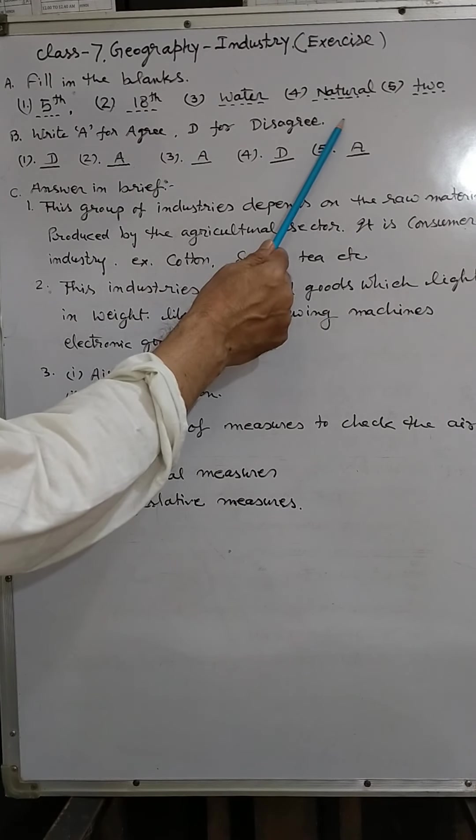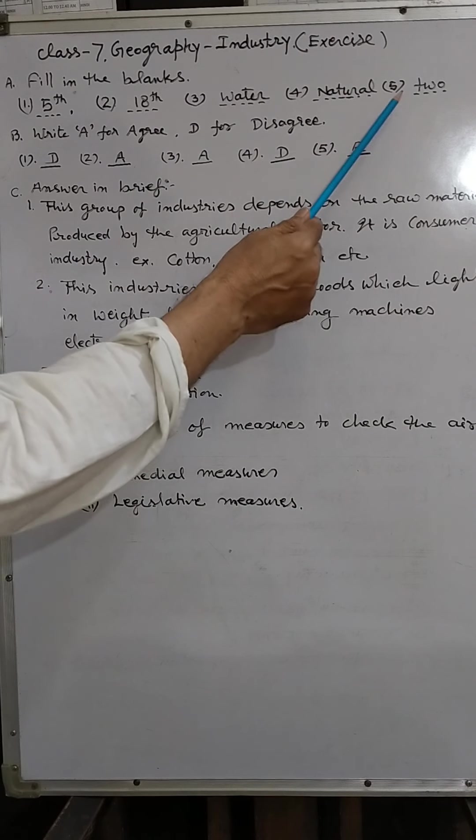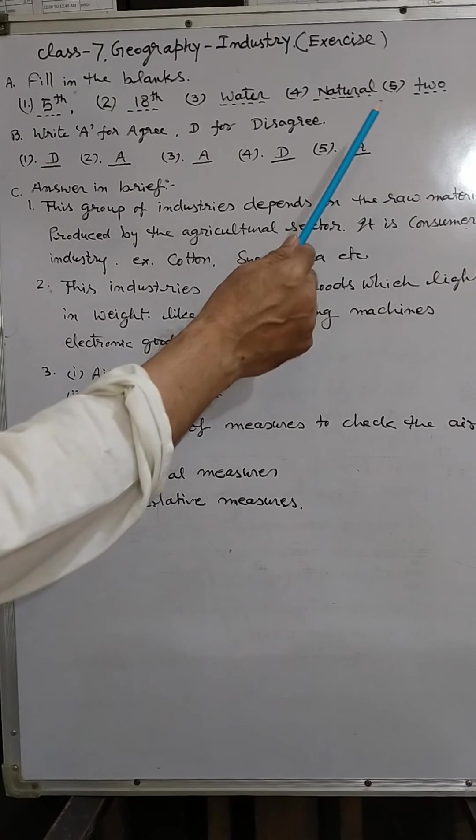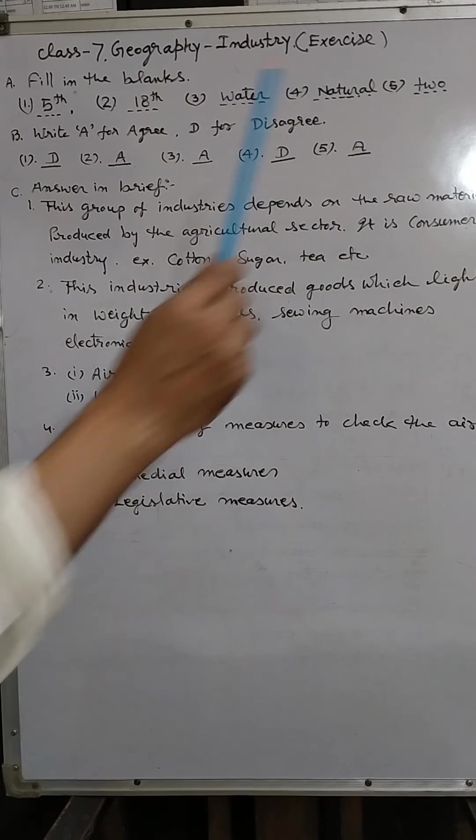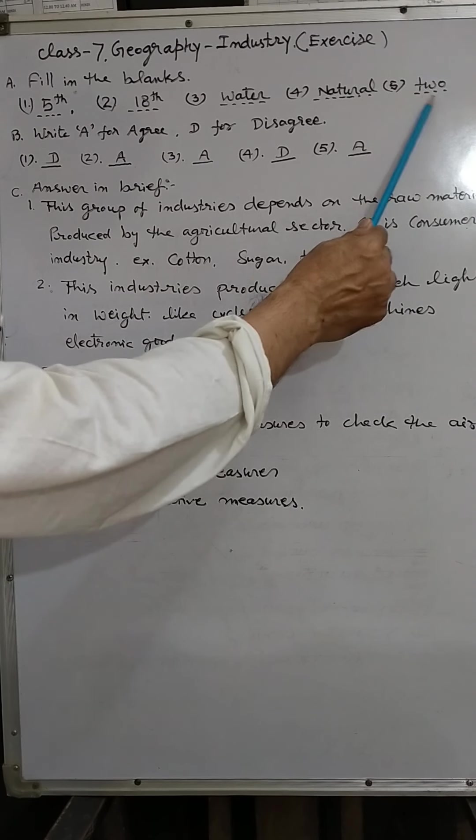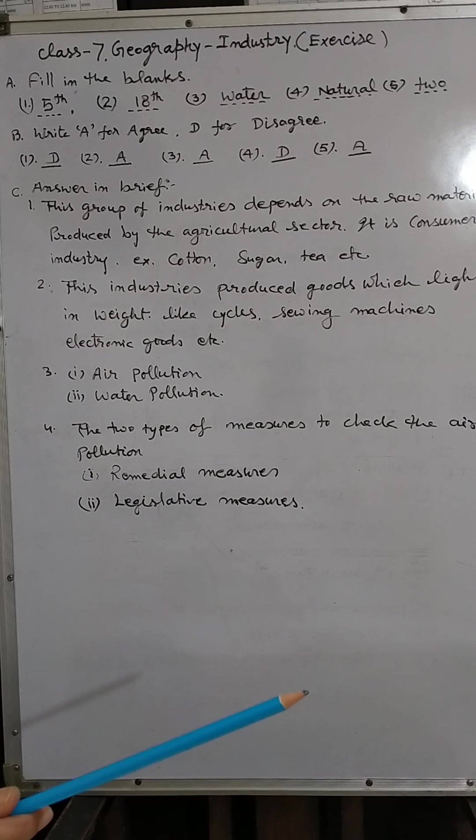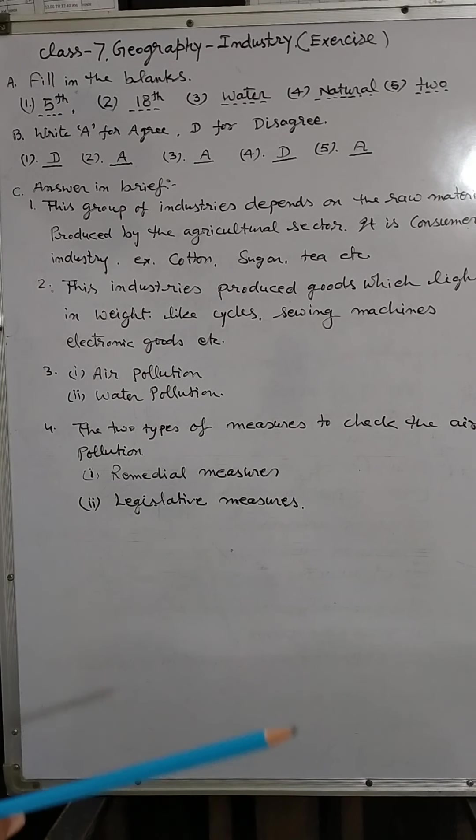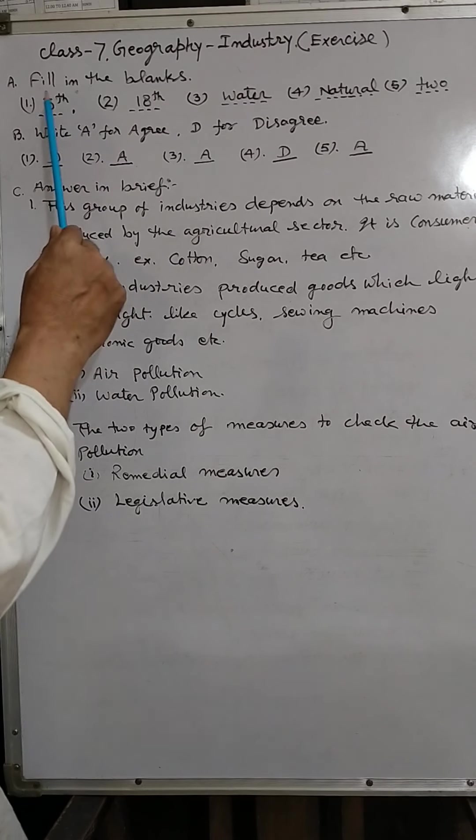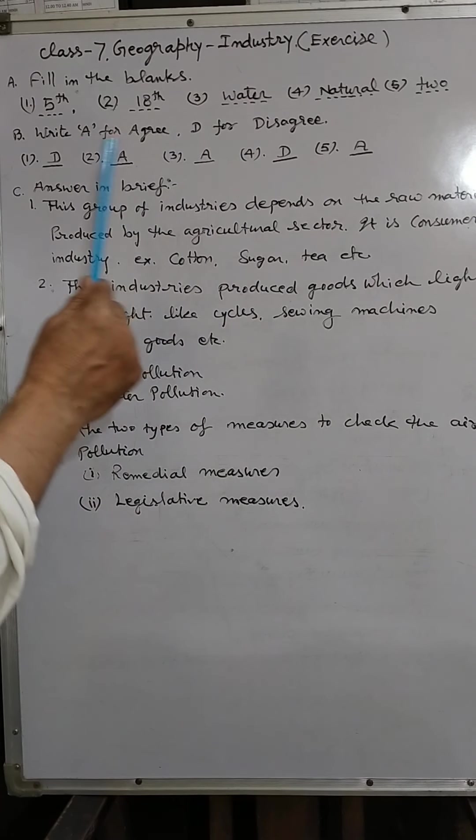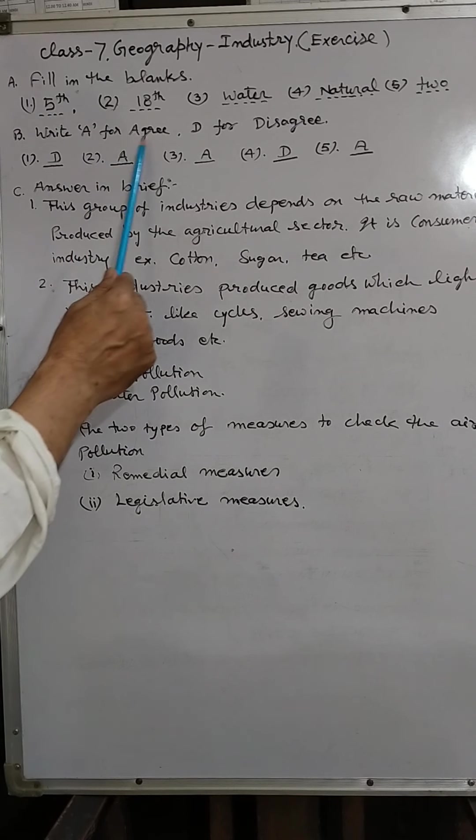This is natural fiber, cotton. There are two classes of pollution. As you know, there are two categories of pollution: biodegradable and non-biodegradable. So these were fill in the blanks. Now write A for agree and D for disagree.